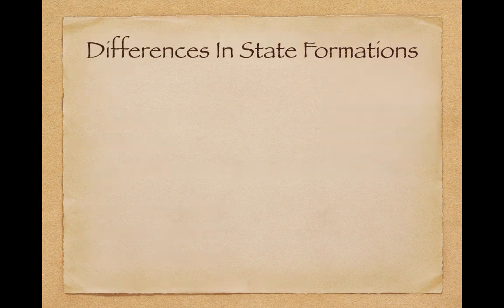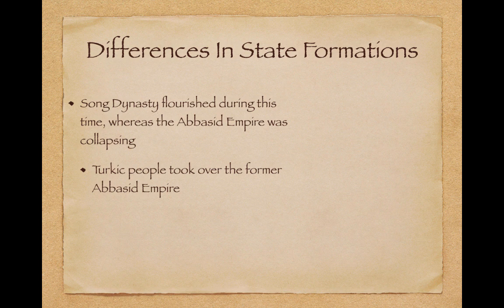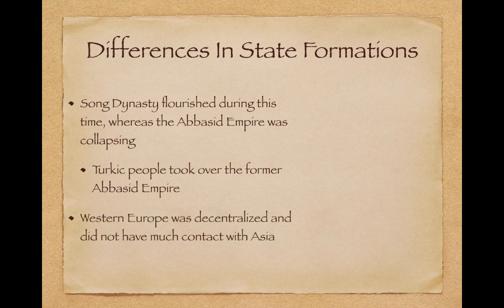Differences in state formations: the Song Dynasty flourished during this time whereas the Abbasid Empire was collapsing — really on the end of its reign. Turkic people took over the former Abbasid Empire, which we'll talk about in future videos. Western Europe was decentralized and did not have much contact with Asia, going through feudalism as discussed in the previous video. The Mayans were run by a series of individual city-states.